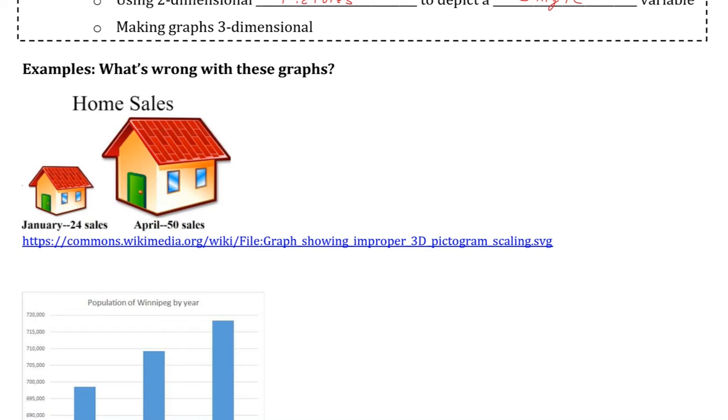First, we have a graphic for home sales in two different months of a given year. In essence, this is a bar plot since we are analyzing these based on height. But the width of the two-dimensional figures used are also scaled, making it seem like the house on the right is much larger than the one on the left due to the area of each. Therefore, our issue is that we are using two-dimensional pictures to depict a single variable.